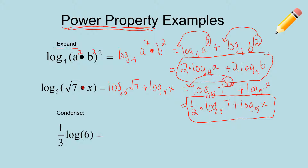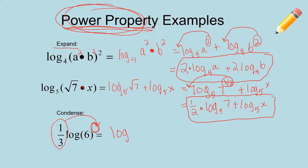Thinking about fractional exponents and radicals: we have to condense 1/3 times log 6. Some of you may think it's already condensed, but you have to get used to the power property — if you see a number in front of a log, when you condense, you bring it up to the power. So we rewrite this as log base 10 of 6 raised to the 1/3 power. Coefficients in front become exponents when you condense. You can leave it as log base 10 of 6 to the 1/3, or rewrite it as log base 10 of the cube root of 6 — either answer is acceptable.